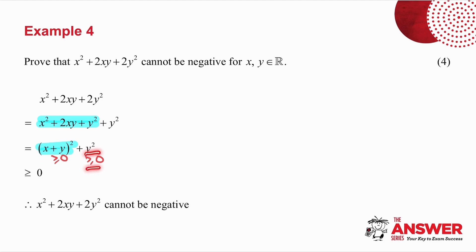Y squared is always greater than or equal to naught. And if I add two things that are greater than or equal to naught, my answer has to be greater than or equal to naught. Which means that x squared plus 2xy plus 2y squared cannot be negative. And that was what I was asked to prove.